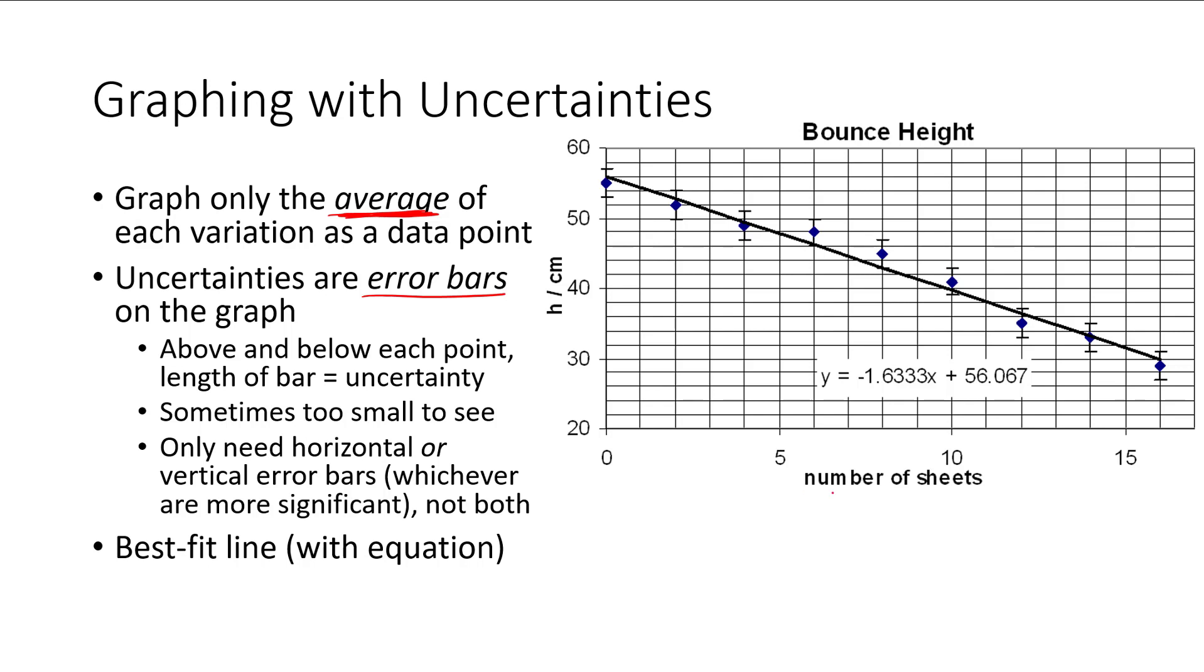Another thing to note is because we have two variables, we can have uncertainty in the X variable or the Y variable, and we could draw both vertical and horizontal error bars. For the IB, we only need one or the other. We don't need both. And we're just going to draw whichever ones are more significant, so whichever ones look bigger on the graph. Once we have our points plotted, our average points plotted, and we have our error bars, we draw a best fit line. It fits all the data points as well as possible, and we'll get the equation as well.